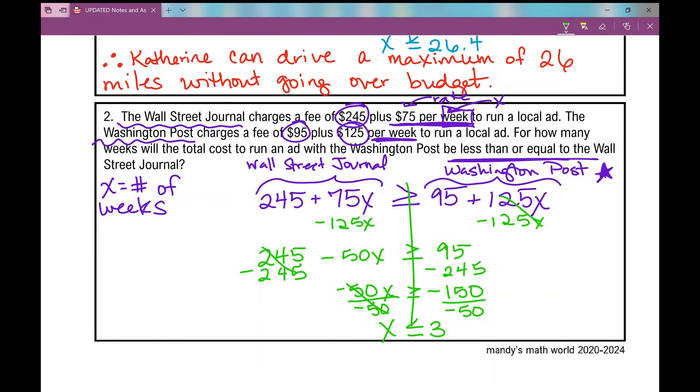And again, because this is a word problem, I can't leave my answer like this. So now, because we've labeled what X equals, it's the number of weeks, I know the number of weeks can be less than or equal to 3. Well, what are we talking about here? We're talking about when the Washington Post will be less expensive or the same.